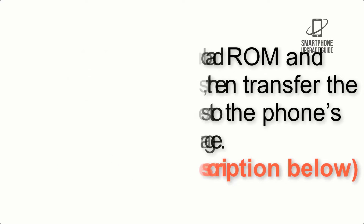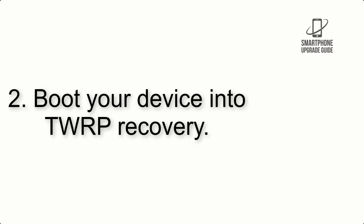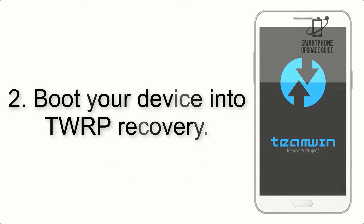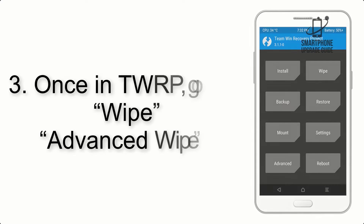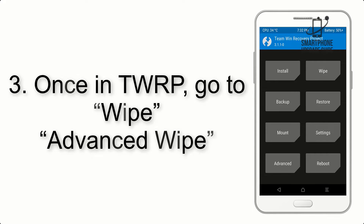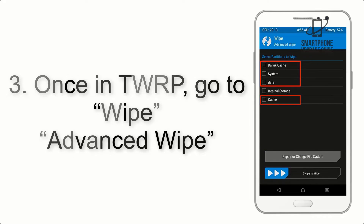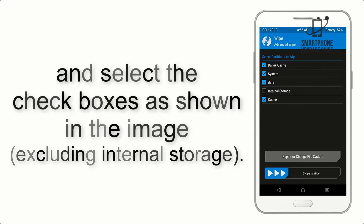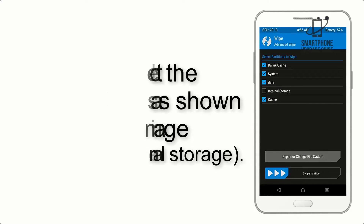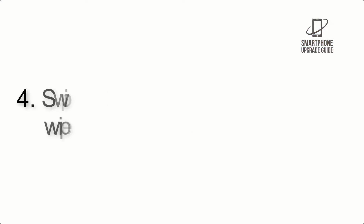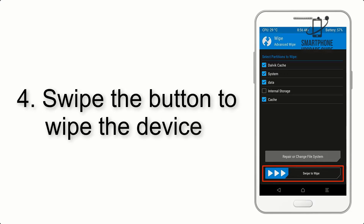Step 3: Boot your device into TWRP recovery. Once in TWRP, click on Advanced Wipe and select the checkboxes as shown in the image, excluding internal storage. Step 4: Swipe the button to wipe the device.